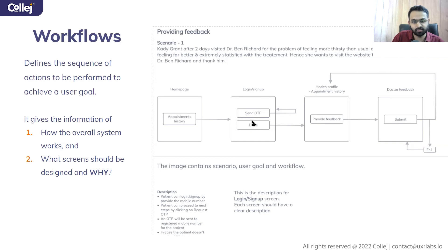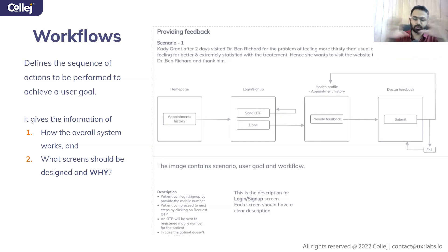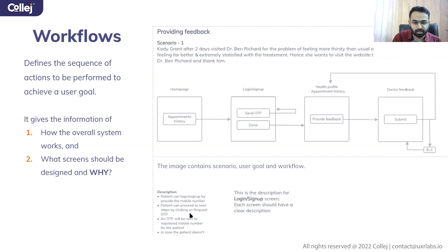Once she's done with login — sending the OTP and receiving it back — she can get to the next step. From there she can provide the feedback and submit it. So these are different stages in which a user is performing different actions. This is the whole workflow: the flow of the experience in which you have stages and the actions that are there. You're describing what happens when you are in that particular stage or screen.